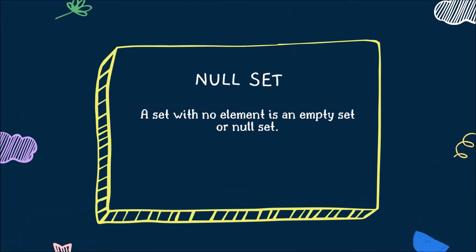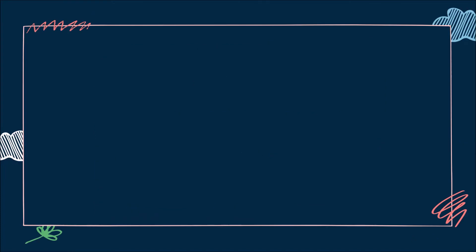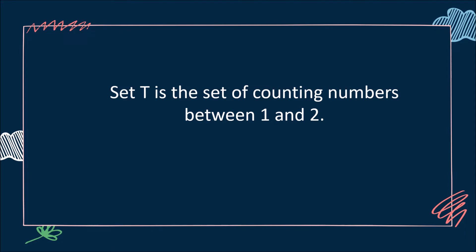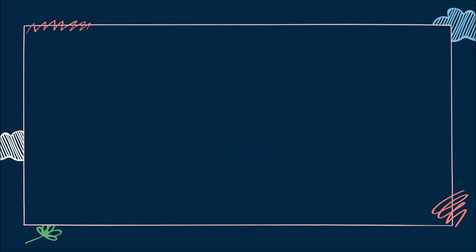A set with no element is an empty set or null set. Null set can be represented using these symbols. Let's have an example. Set T is the set of counting numbers between 1 and 2. 1.1, 1.2, 1.3, and so on are not considered as counting numbers.